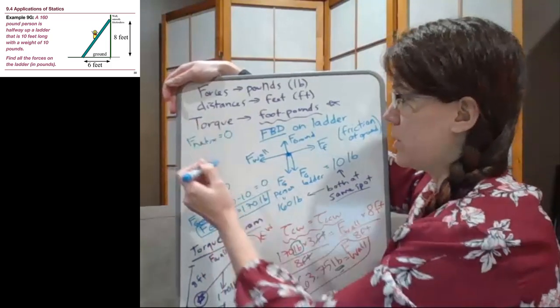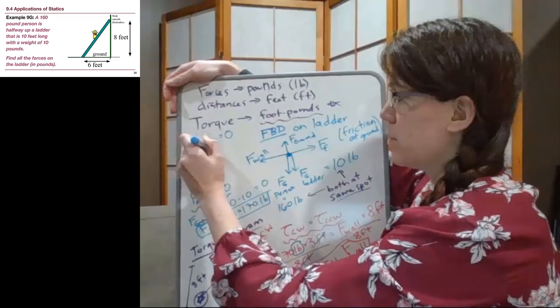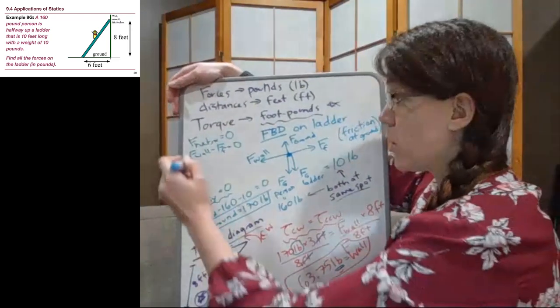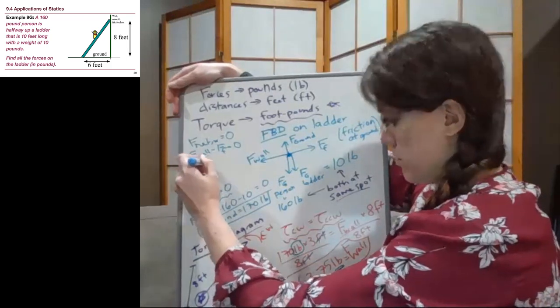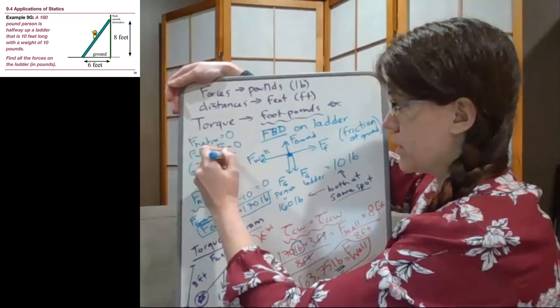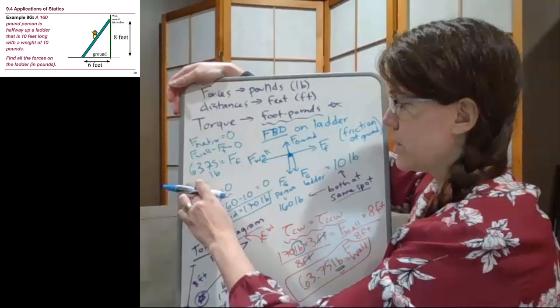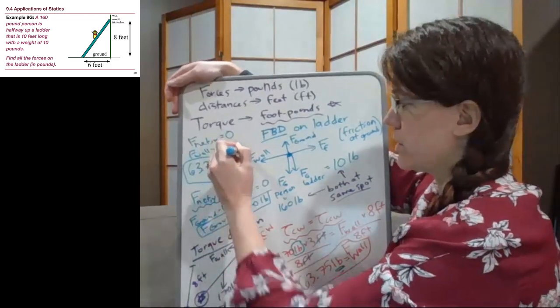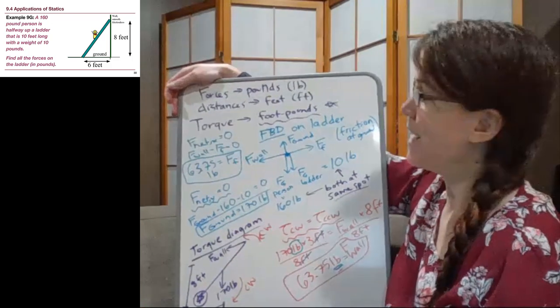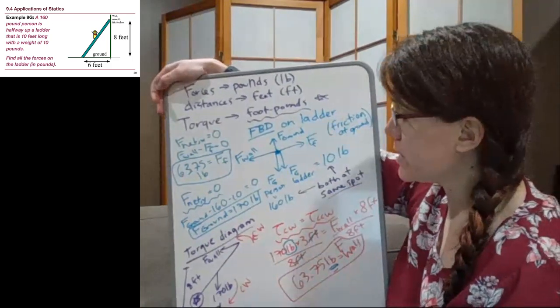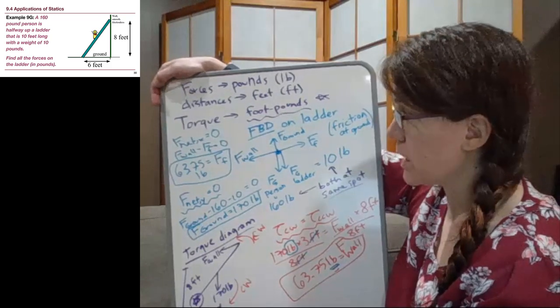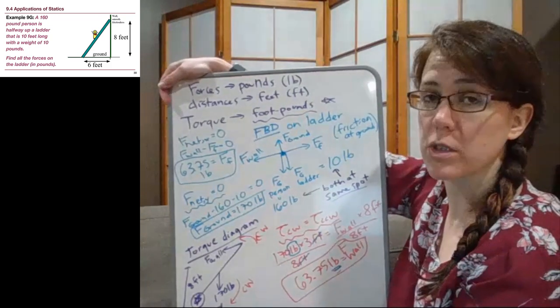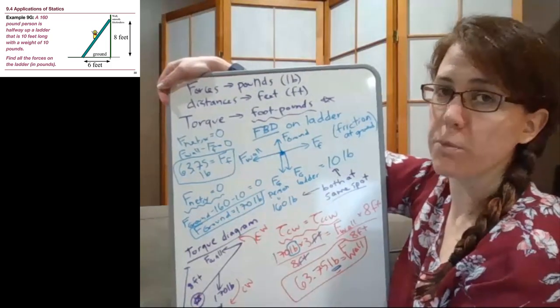The last step here is to note that the net forces in the x-direction have to add up to zero. So the wall force minus friction equals zero, and so it is also equal to 63.75 pounds. The friction force is 63.75 pounds.